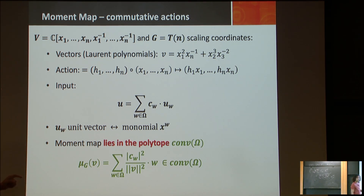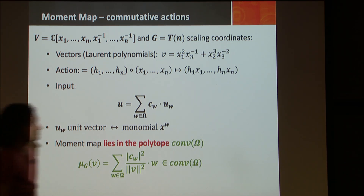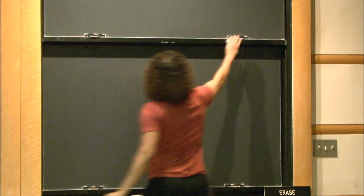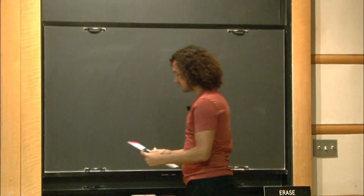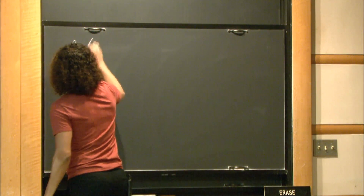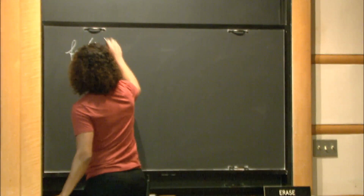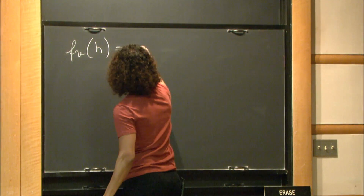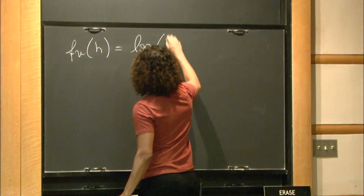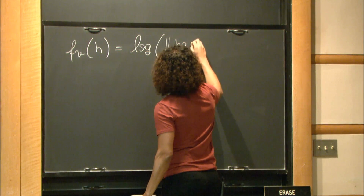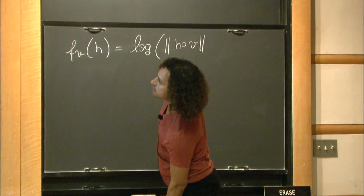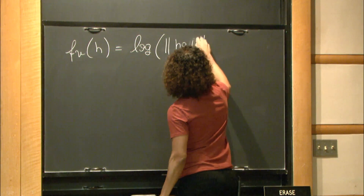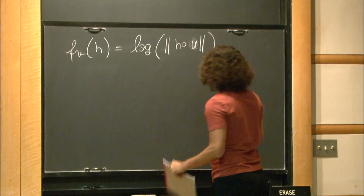Let me compute it on the board. Our function f_u(h) is the log of the norm of h applied to vector u. Since u = sum c_w u_w and the u_w are an orthonormal basis, this log norm equals (1/2) log of the sum over w of |c_w|^2 times the product of |h_i|^{2w_i}.